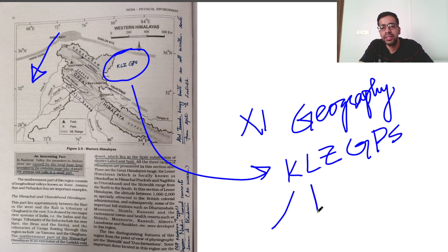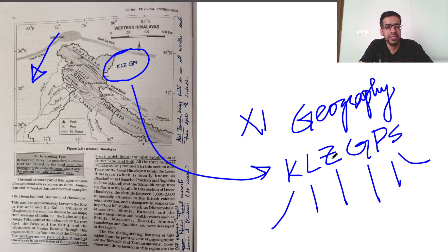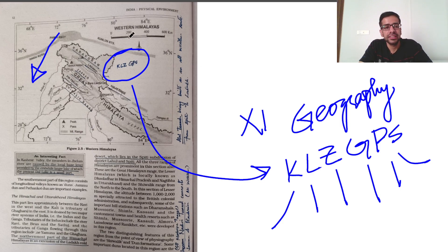I used the acronym KLZGPS for North to South mountain ranges. It stands for Karakoram, Ladakh, Zanskar, Great Himalayas, Pir Panjal, and Shivalik. KLZGPS is a simple acronym. This is how you can effectively use your NCERTs.